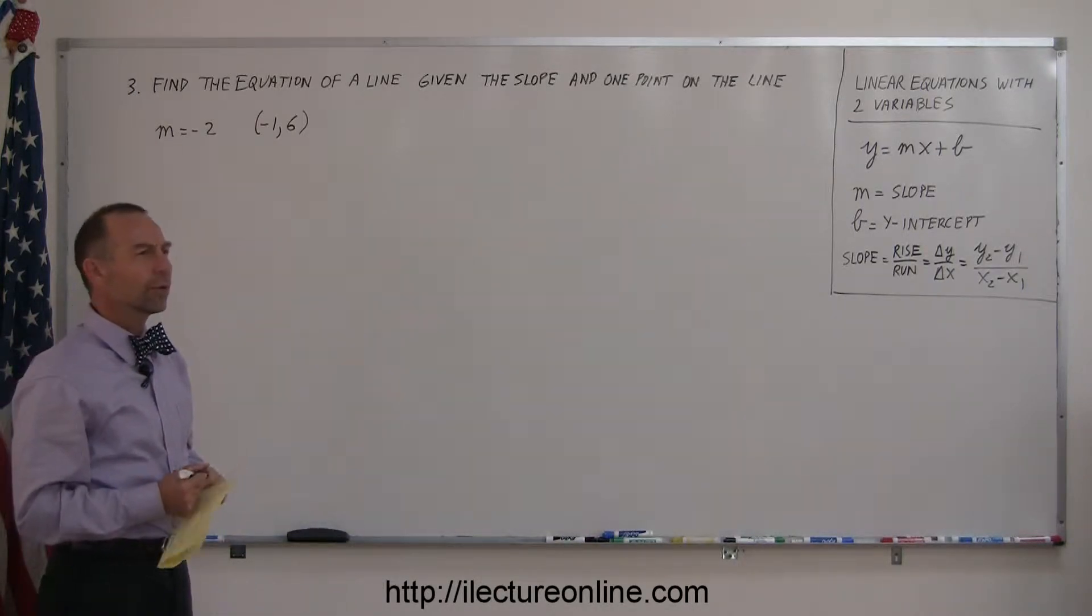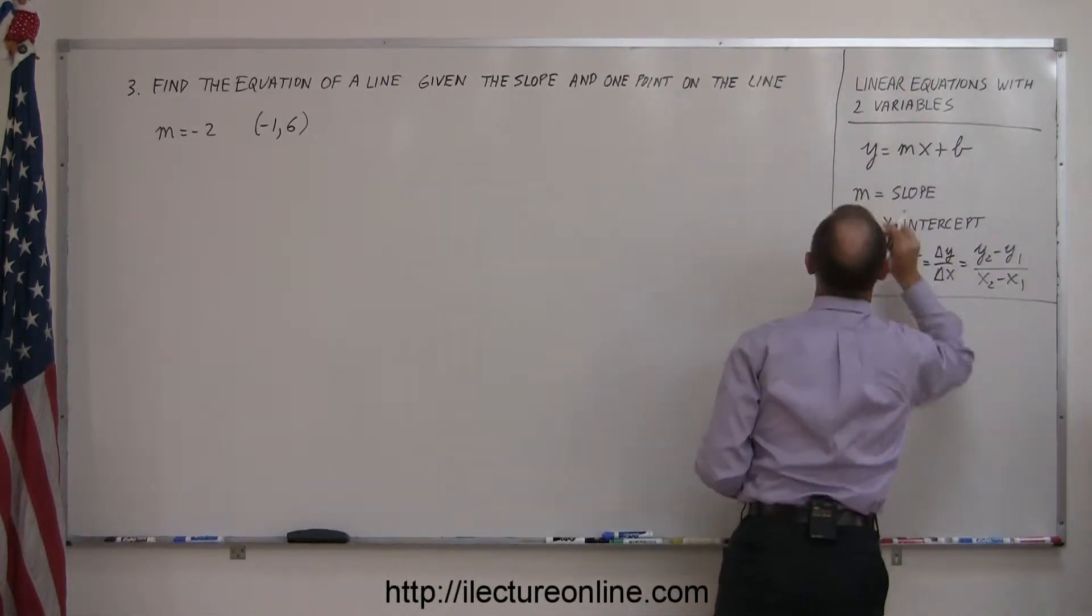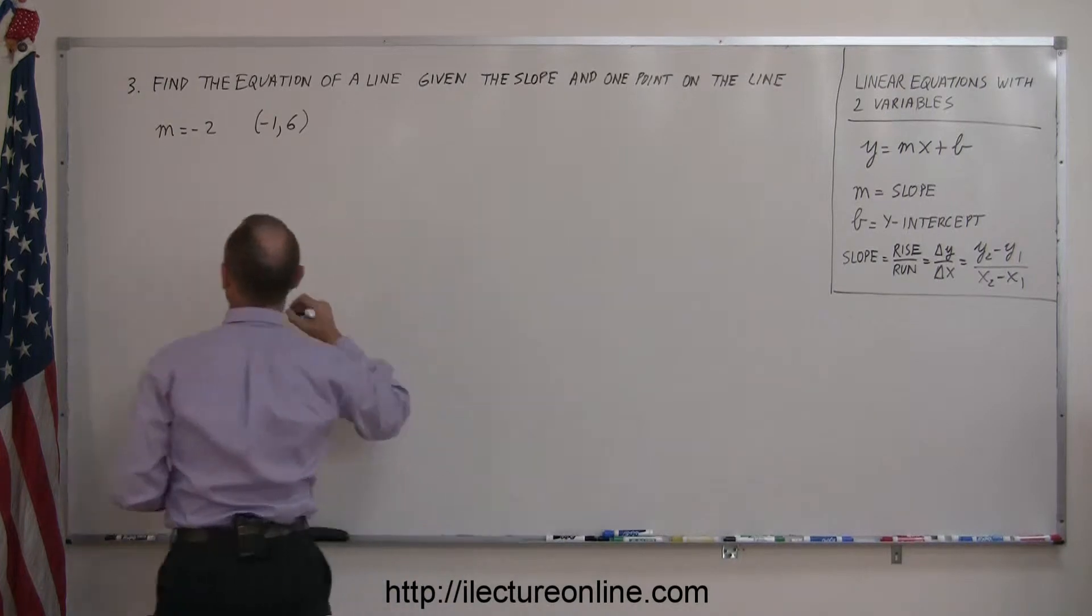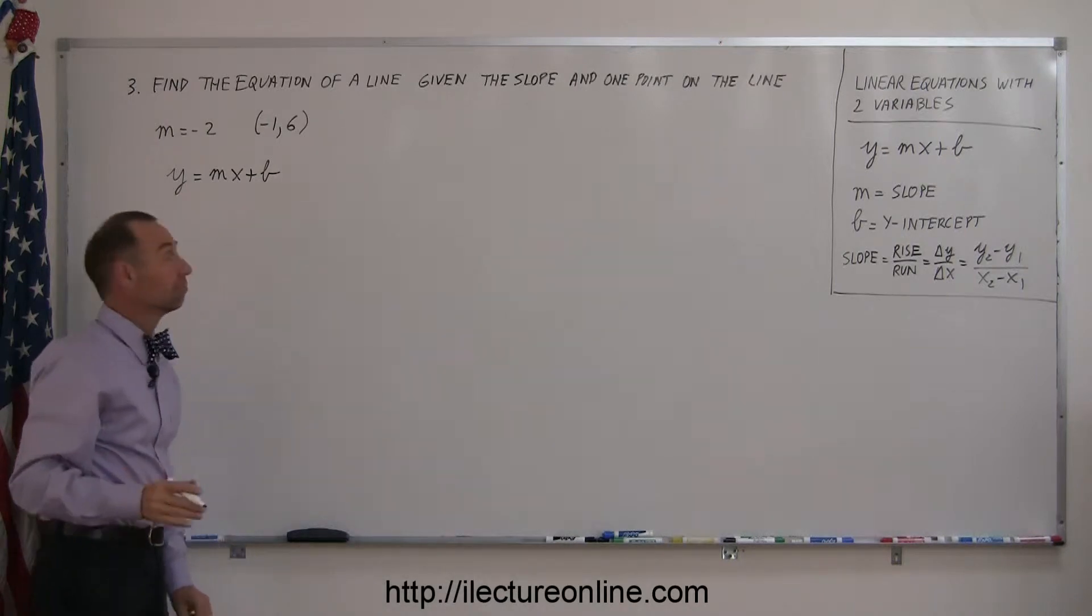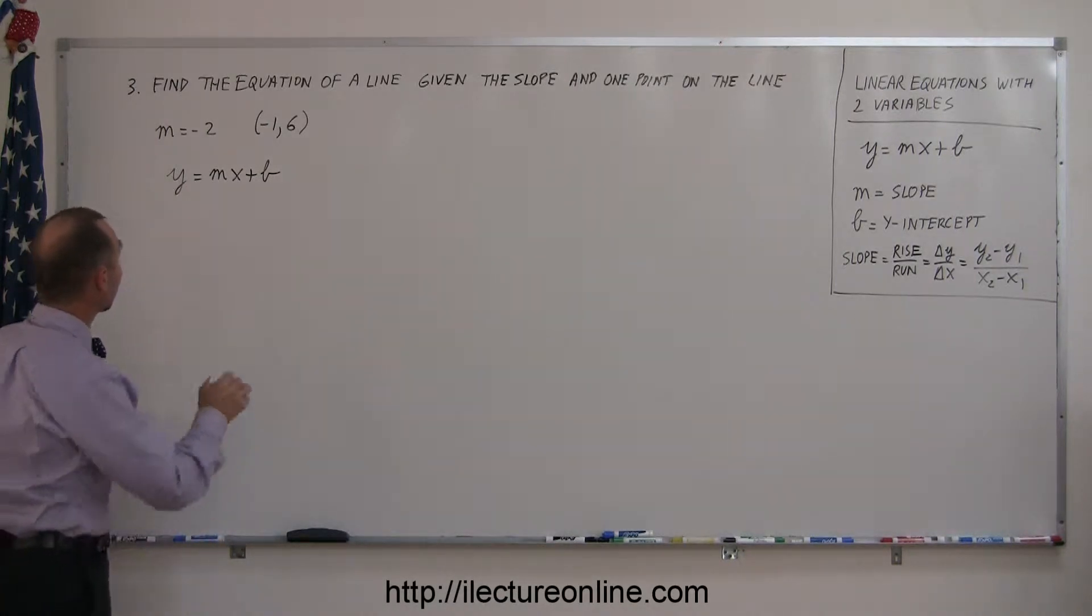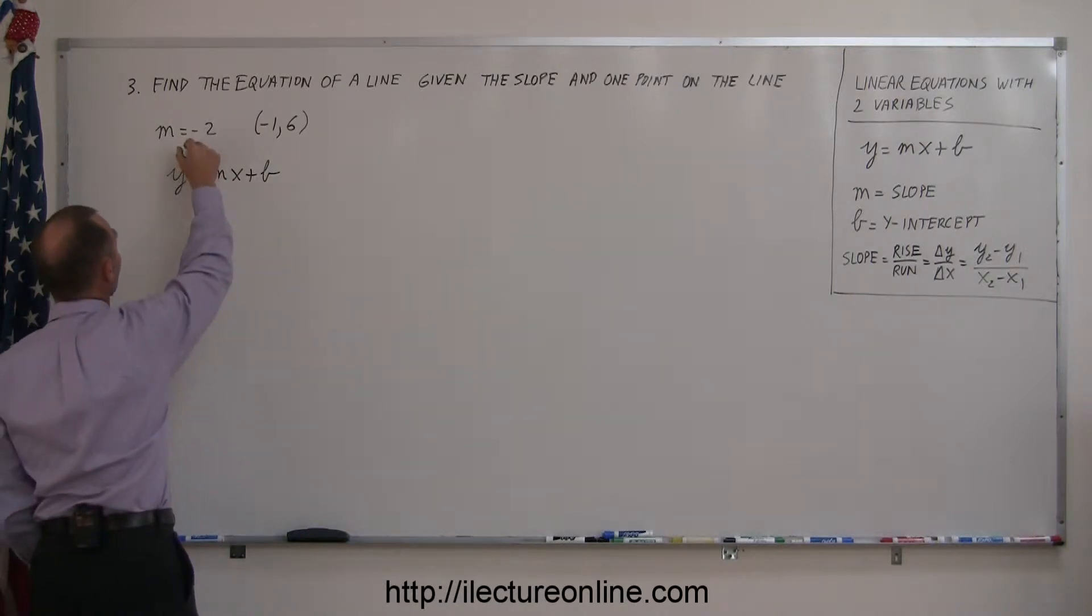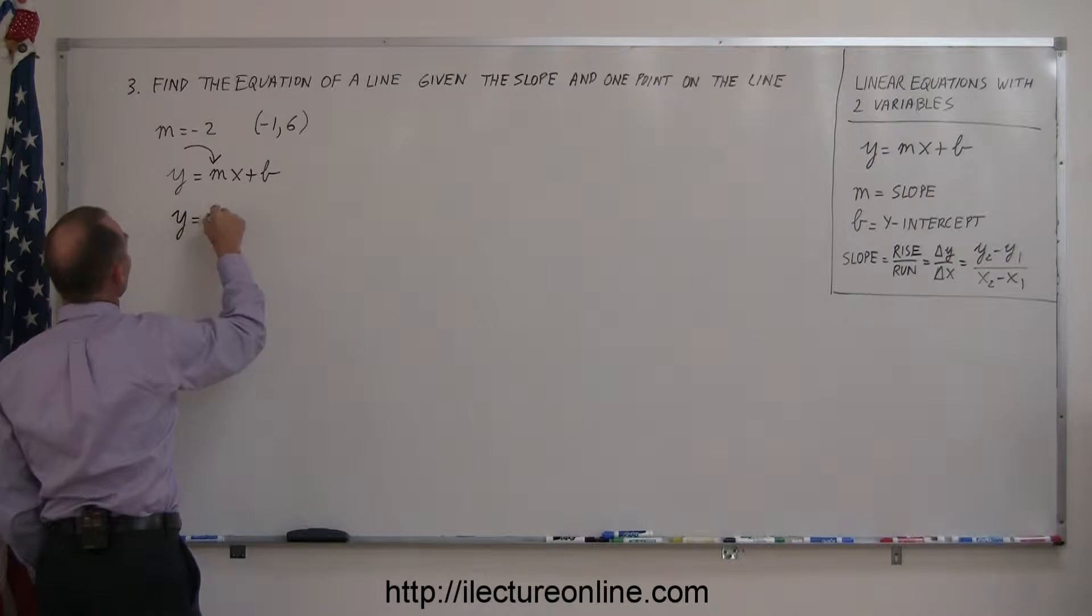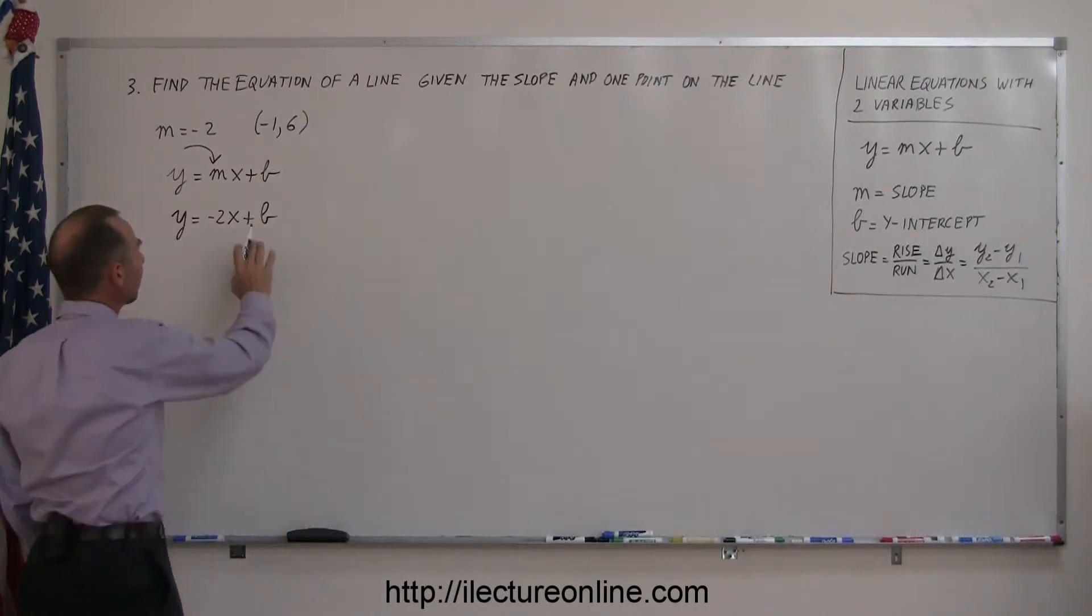The thing to always do is say the equation must look like this, so write that. I have to have y equals mx plus b. You recognize here's m equals negative 2. They already gave me the slope, which means I can plug that number right in and write y equals negative 2x plus b. So the only other thing I need to figure out is what b is equal to.